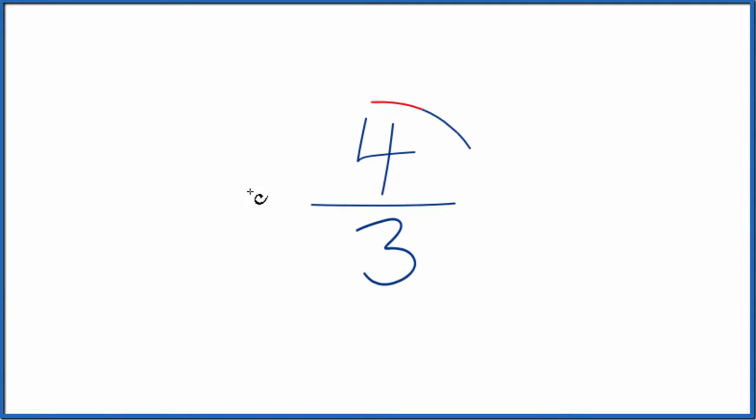If you need to write the fraction four-thirds as a mixed number, also called an improper fraction, here's how you do it.